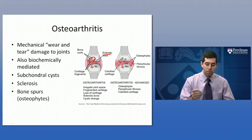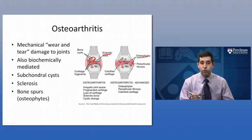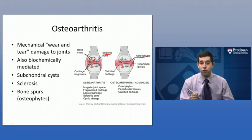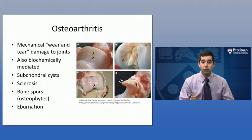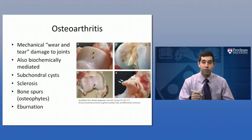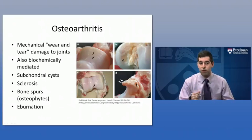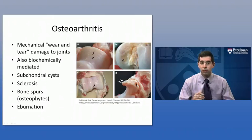We may also see bone spurs, or osteophytes. Osteophytes usually occur at the lateral portion of the joint and are essentially small extensions of bone sticking into the joint space itself. We may also see eburnation, which is essentially a polished texture on the end of the bone caused by constant rubbing. It creates an ivory-like appearance, and that eburnation — causing additional smoothness of bone — is also weakening the surface of the bone.